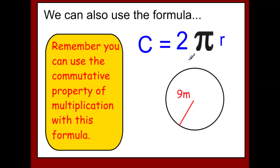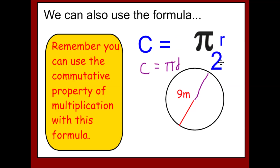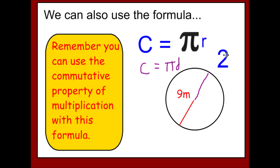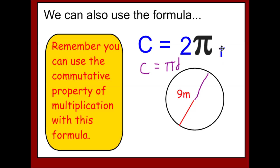A second formula for finding circumference is 2 times pi times r. This makes sense because if you double the radius, it's the same as the diameter — so it's equivalent to pi times diameter. When using this formula, it doesn't matter which order you multiply the three factors. You'll commonly see 2πr as the second formula for circumference.